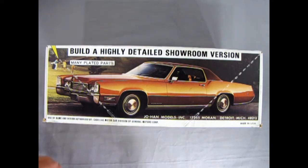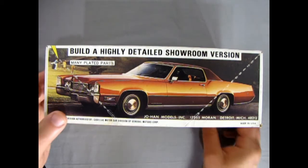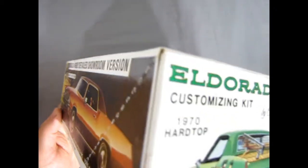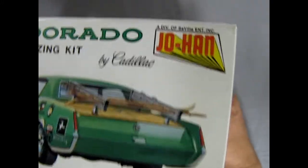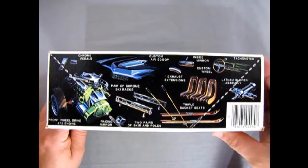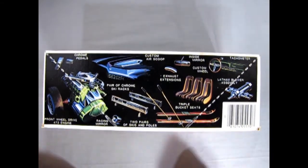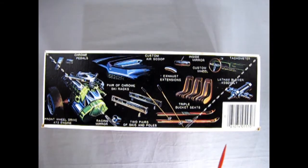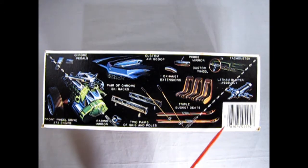On the side of the box here we can see the amazing looking stock variation of this kit painted in a metallic brown color, which was a popular choice getting into the 70s. You'll see that many times over and over. This is build a highly detailed showroom version with many plated parts. Cadillac in the park. The end of the box looks much the same.